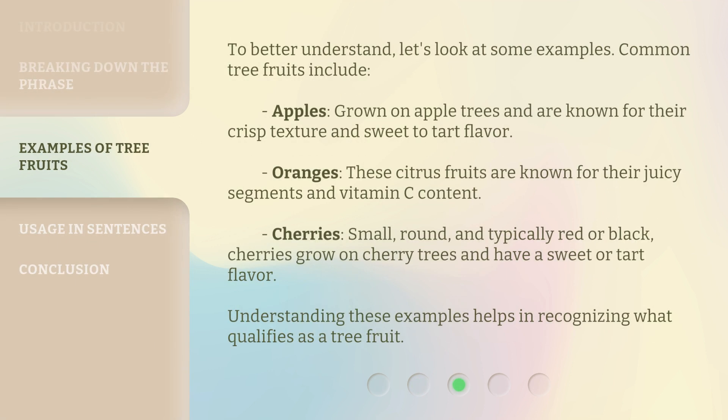To better understand, let's look at some examples. Common tree fruits include apples, grown on apple trees and known for their crisp texture and sweet to tart flavor; oranges, citrus fruits known for their juicy segments and vitamin C content; and cherries, small, round, and typically red or black, grown on cherry trees with a sweet or tart flavor. Understanding these examples helps in recognizing what qualifies as a tree fruit.